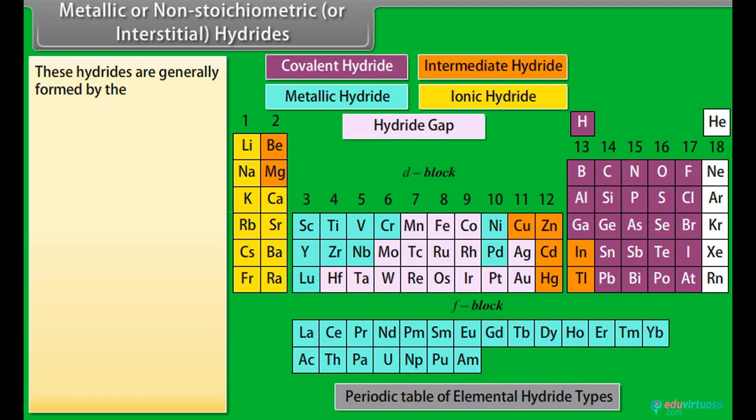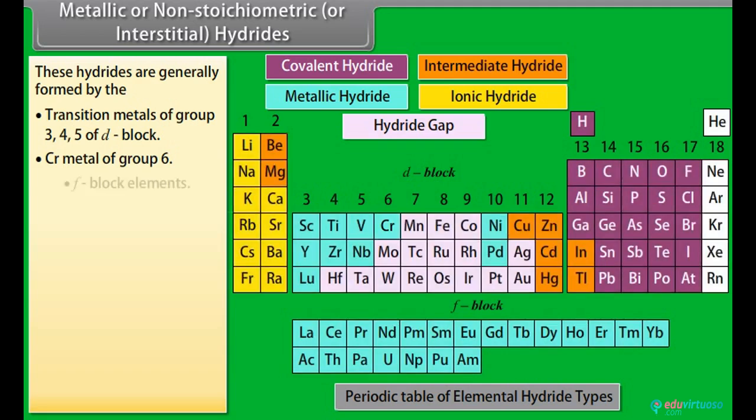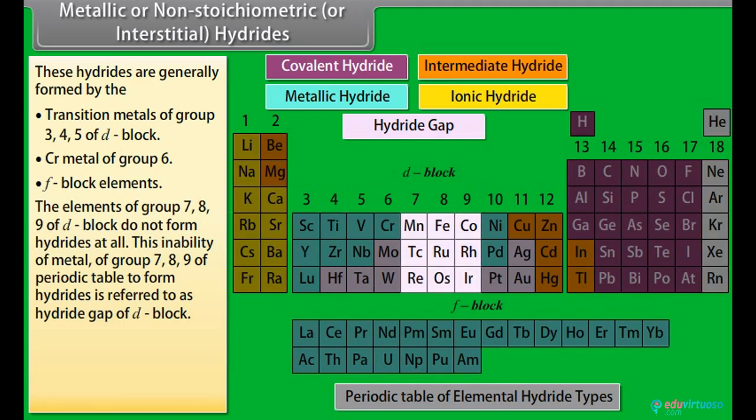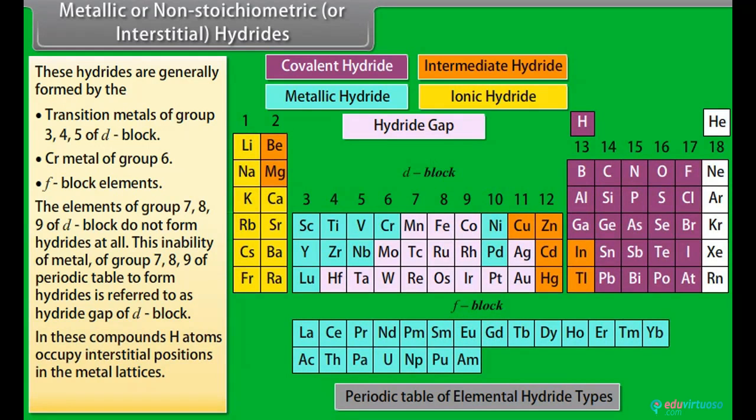Metallic or non-stoichiometric or interstitial hydrides: These hydrides are generally formed by the transition metal of group 3, 4, 5 of D block, transition metal of group 6, F block elements. The elements of group 7, 8, 9 of D block do not form hydrides at all. This inability of metal of group 7, 8, 9 of periodic table to form hydrides is referred to as hydride gap of D block. In these compounds, H atoms occupy interstitial positions in the metal lattices. For example, ScH2 LaH2.87.